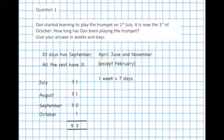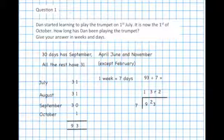1 week is 7 days, so we need to divide 93 by 7. And the answer is 13, remainder 2. 13 weeks and 2 days.